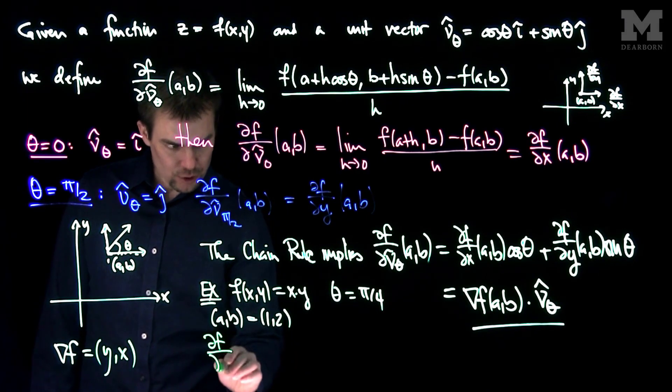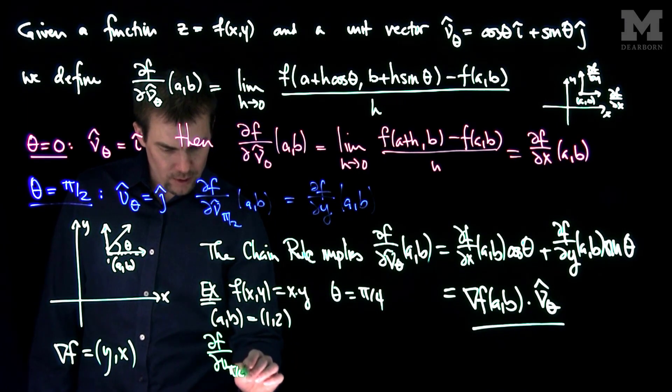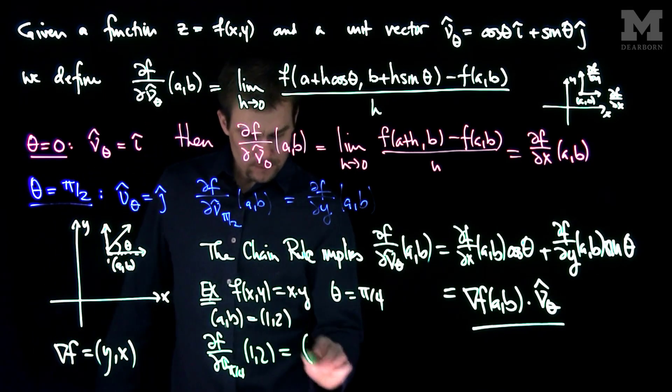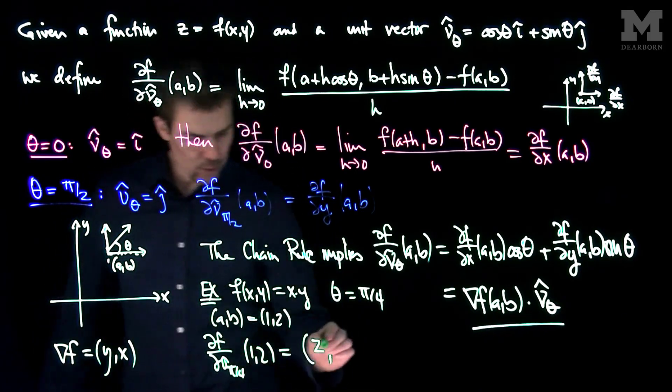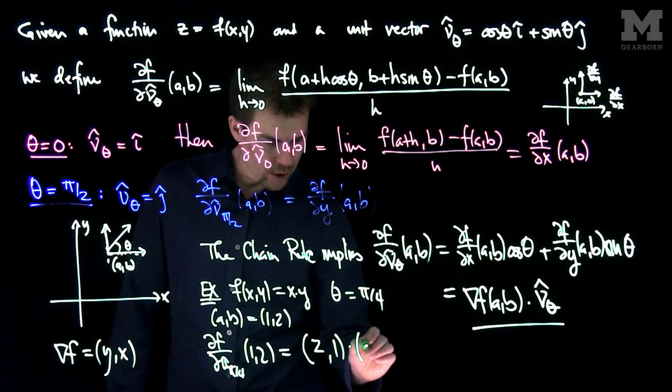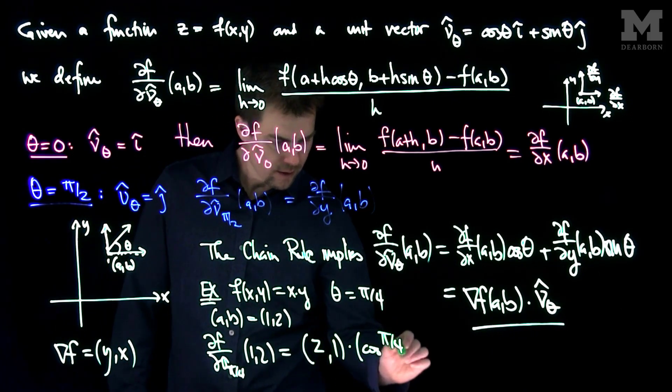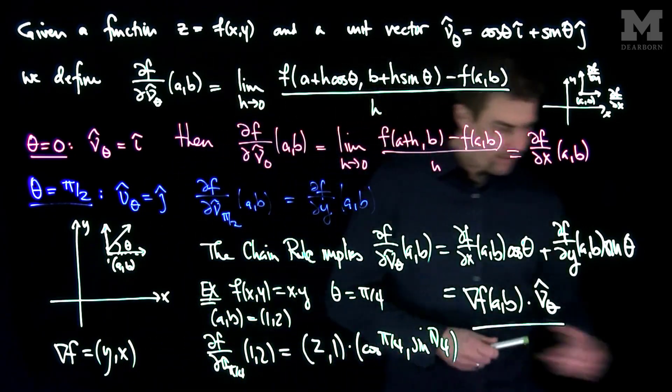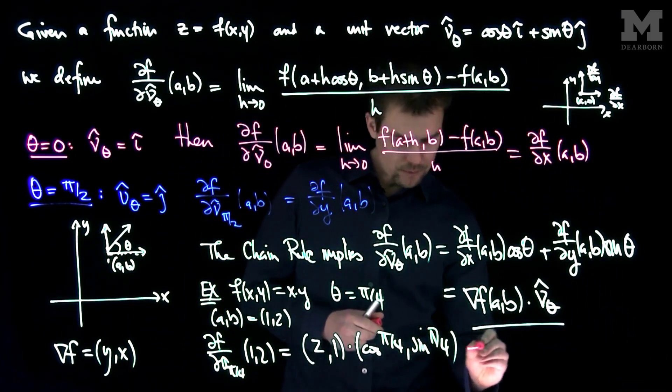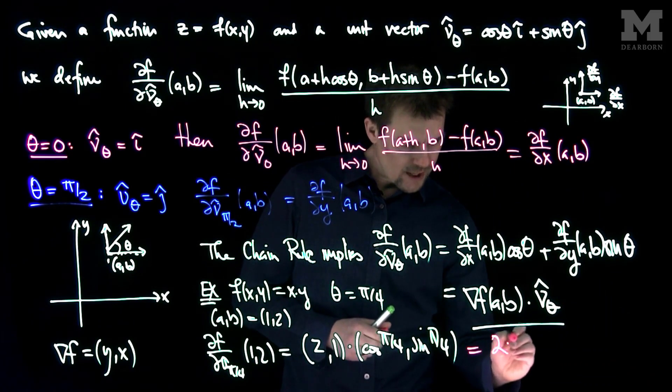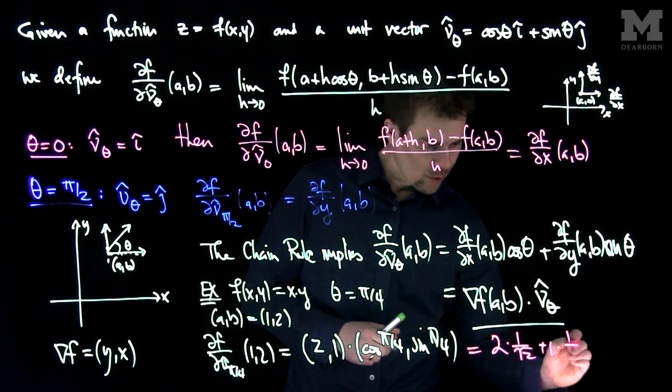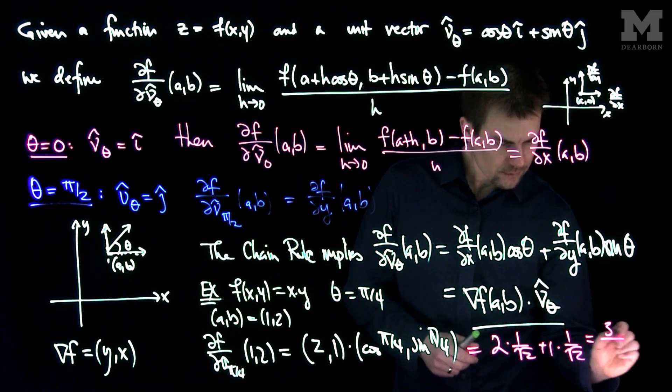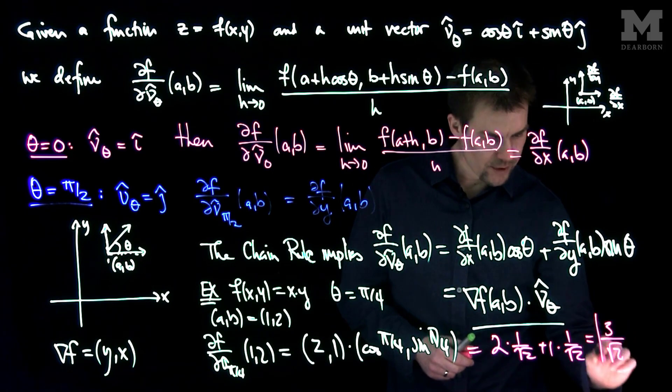So in other words, partial f partial nu pi over 4 at the point 1, 2, will be y is equal to 2, x is equal to 1, and we'll dot that with the cosine of pi over 4, the sine of pi over 4, each of those are equal to 1 over root 2, so our final answer for this would be 2 times 1 over root 2 plus 1 times 1 over root 2, so we get a total of 3 over the square root of 2 as our directional derivative.